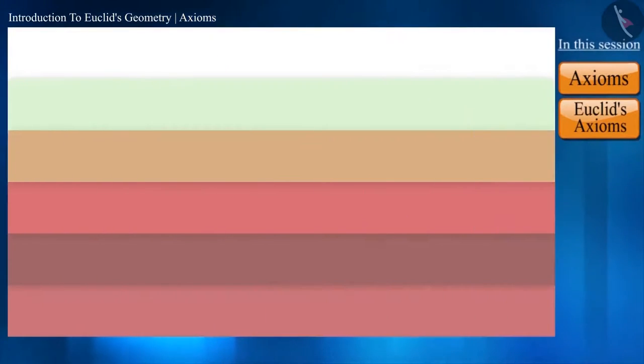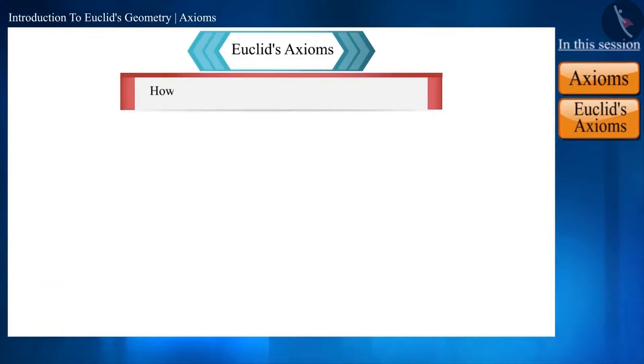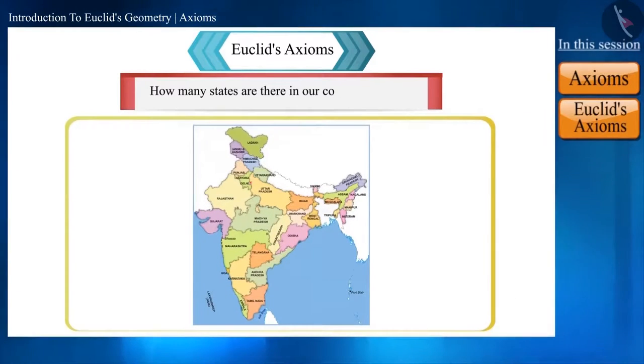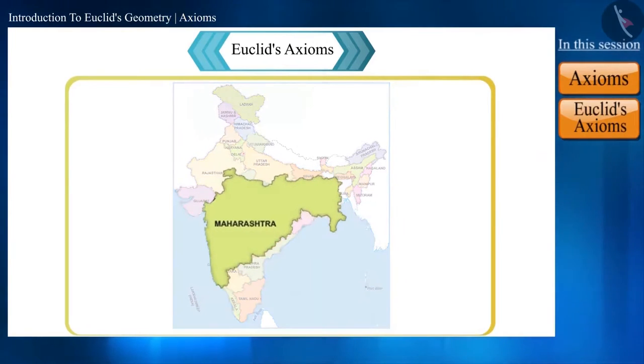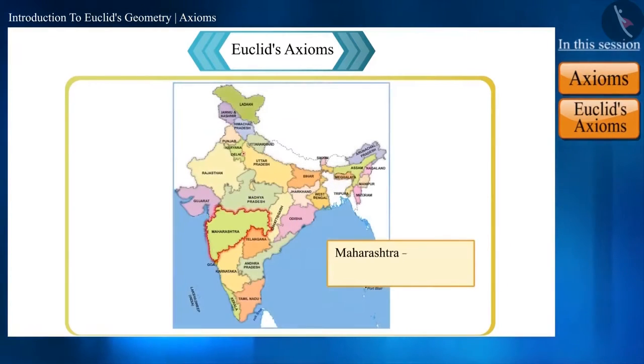Before coming to Euclid's fifth axiom, let's see a simple question. Tell us how many states there are in our country, India. Yes, there are a total of 28 states. That is, India is divided into 28 states. If we look at one of these states like Maharashtra, then it is certain that it will be smaller than India, because it is only a part of India.